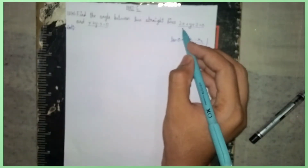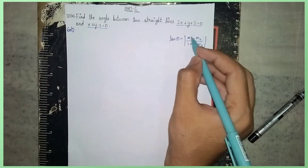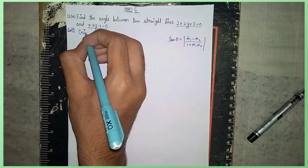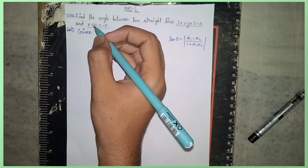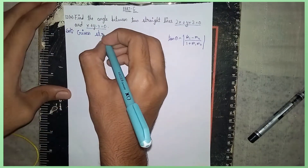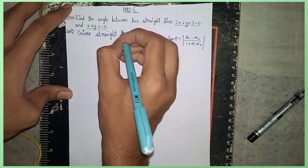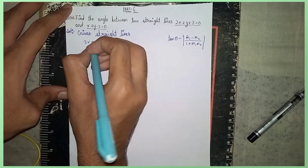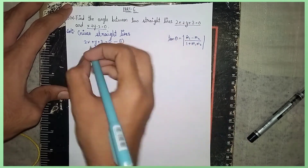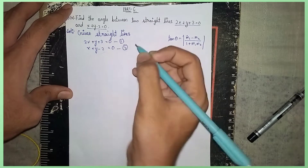To find the slopes m1 and m2, we look at the given straight lines. The given straight lines are: 2x plus y plus 3 equals 0 — take it as equation number one. And x plus y minus 2 equals 0 — take it as equation number two.